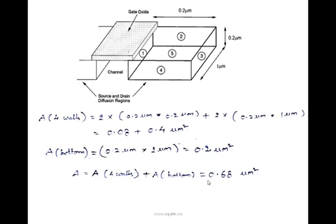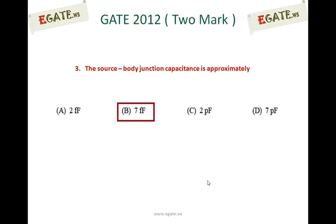The source body junction capacitance is C = ε₀ × εSi × A / WD. Substituting all the known values, the final answer is 7 femtofarads. So the correct answer is B — 7 femtofarads. Source body junction capacitance is 7 femtofarads. Thank you.